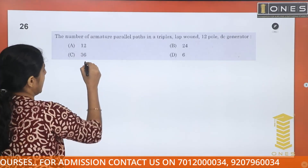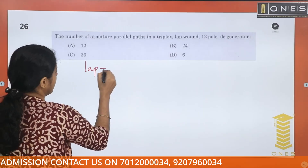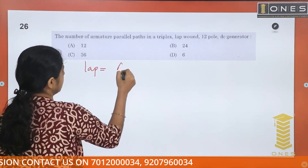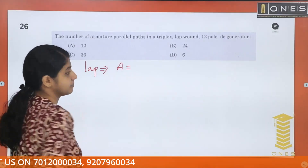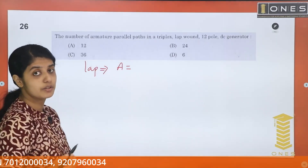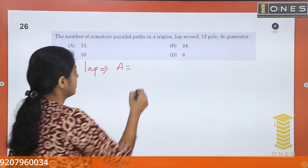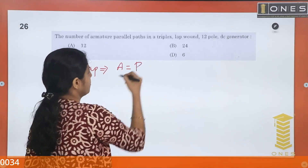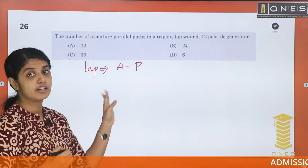That is a lap winding. For lap winding, we say a is equal to the number of parallel paths, and a is equal to the number of poles p. So a is equal to p.